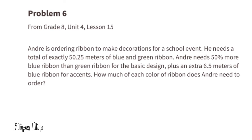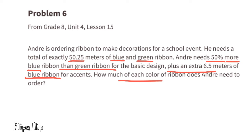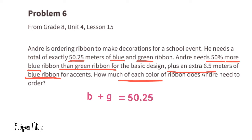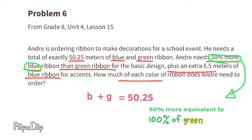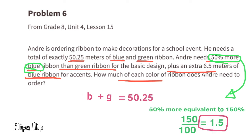Problem number six from 8th grade Unit 4, Lesson 15. Andre needs a total of exactly 50.25 meters of blue and green ribbon. He needs 50 percent more blue ribbon than green ribbon for the basic design, plus an extra 6.5 meters of blue ribbon for accents. We can write the equation b plus g equals 50.25. Since he needs 50% more blue than green, that means 150% of green, or 1.5g.